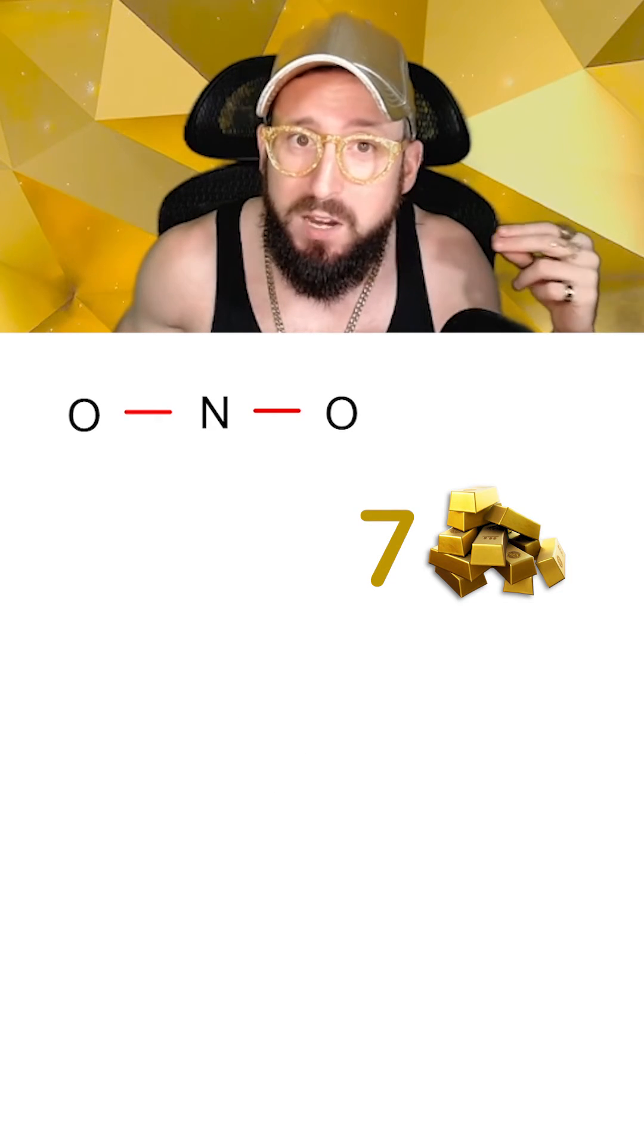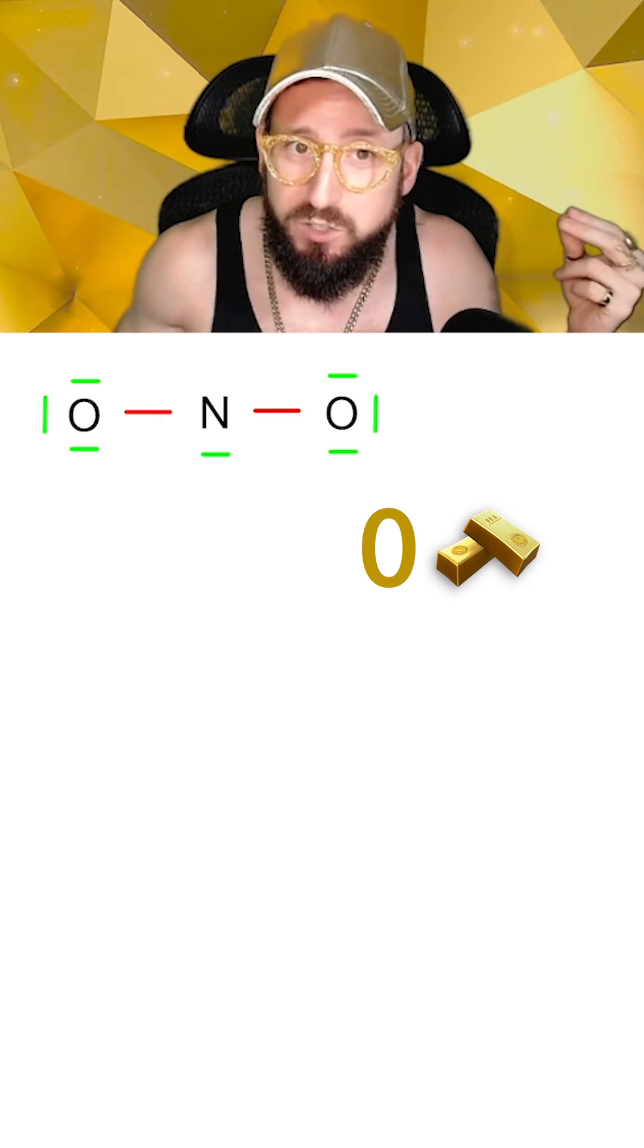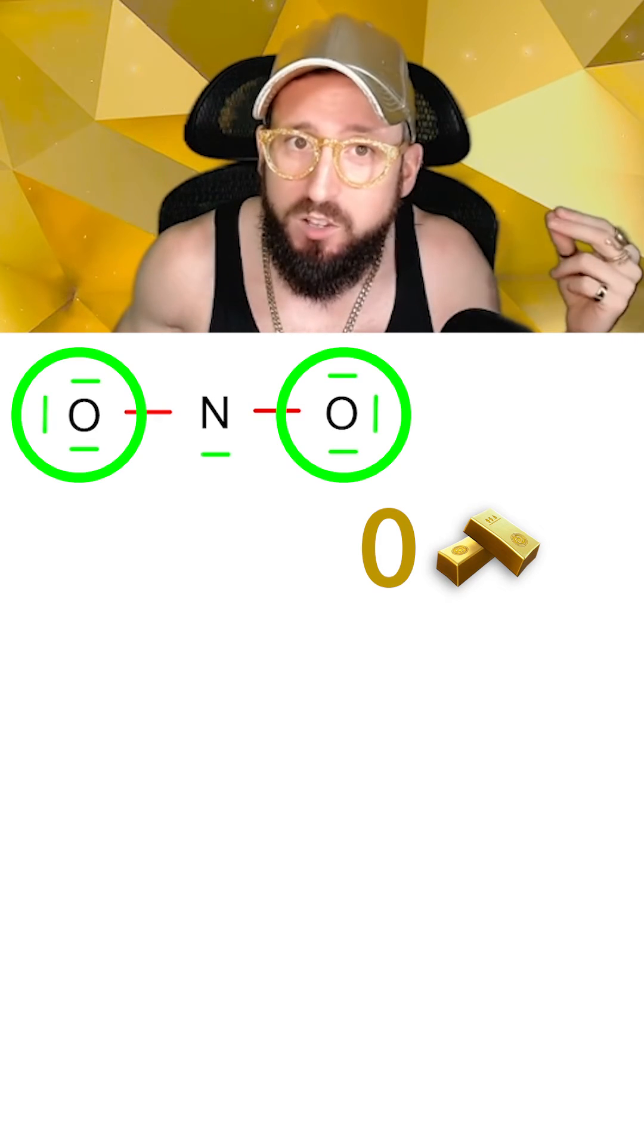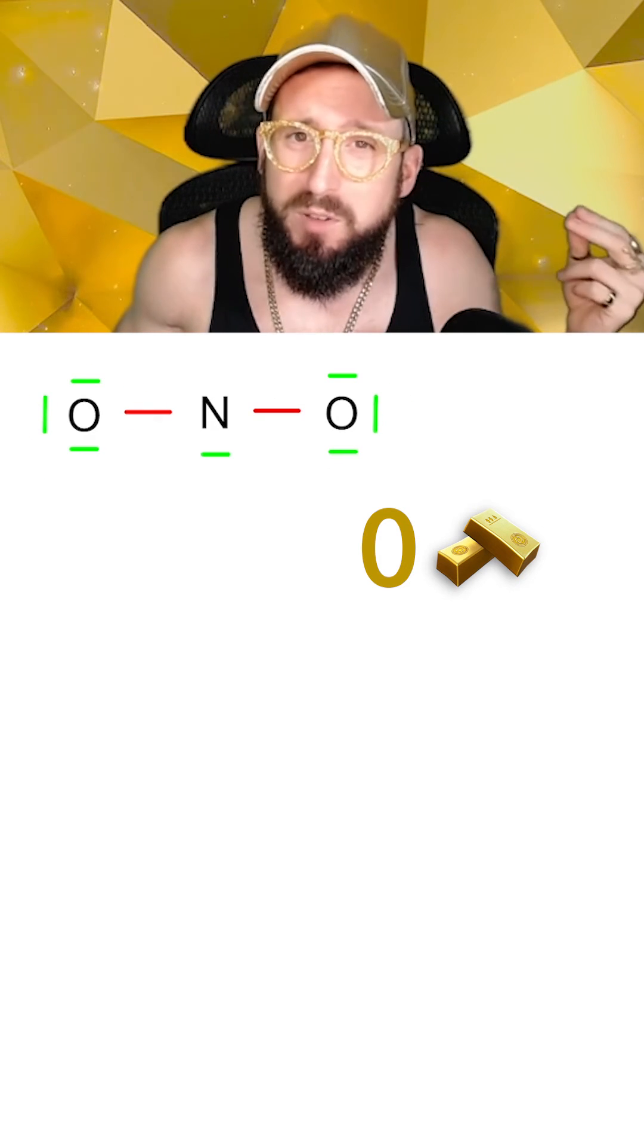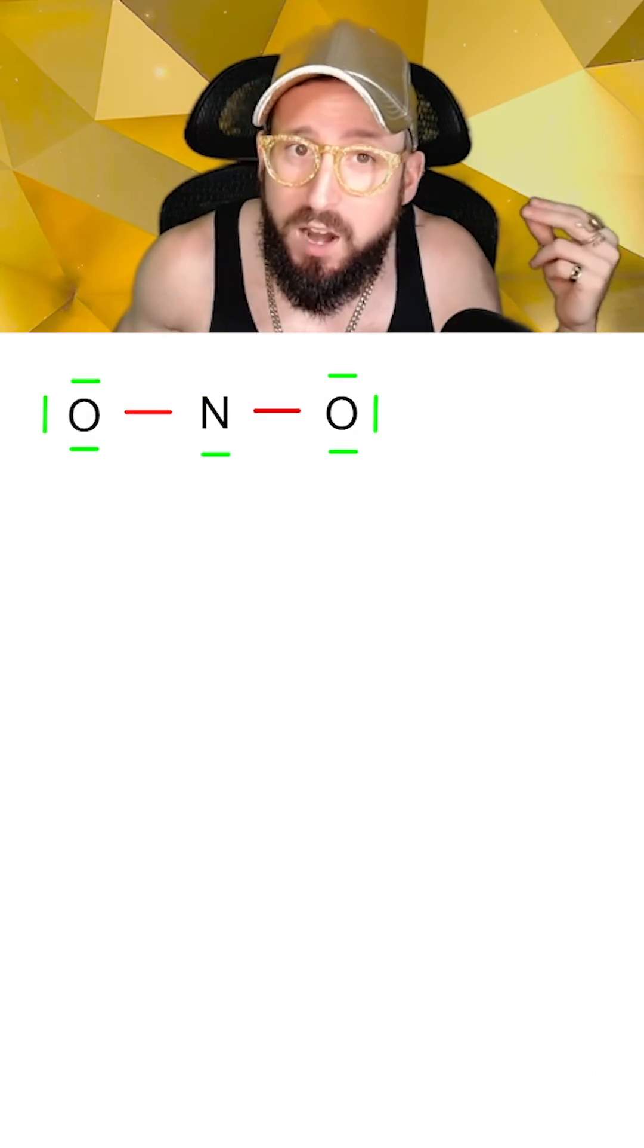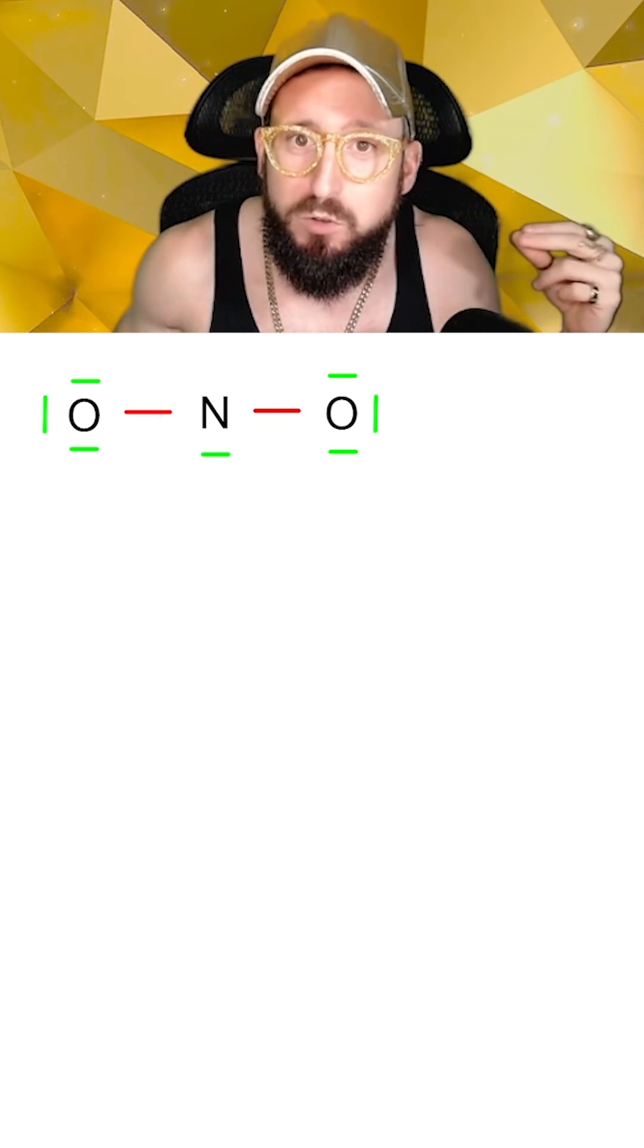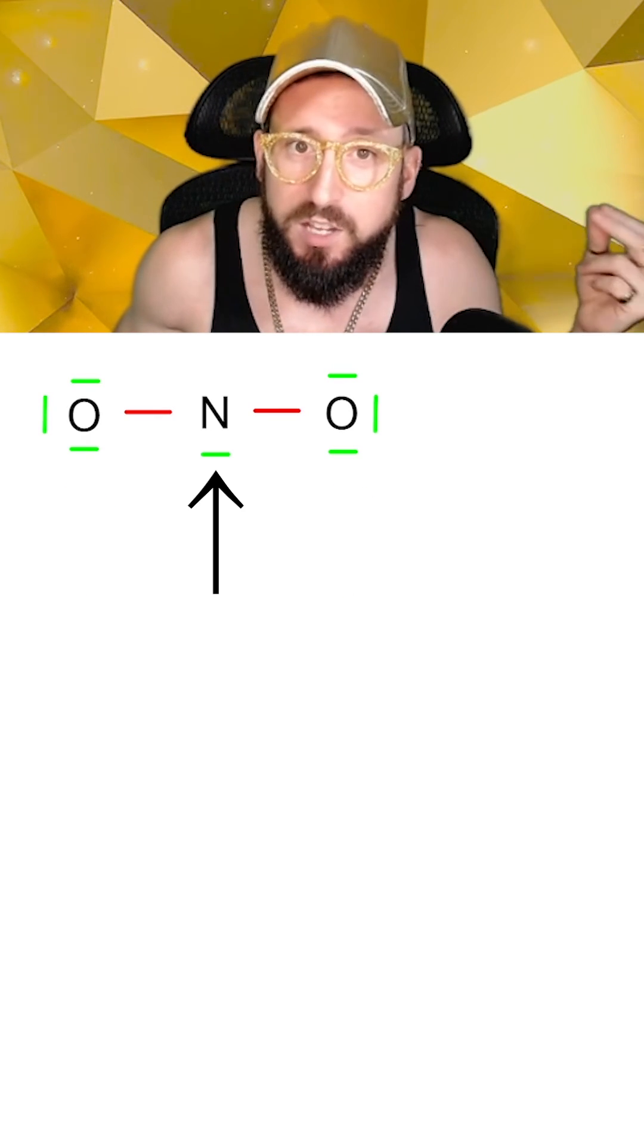Our next step is to try and use up all the remaining bars by first placing them on the outside oxygens, and then on the central nitrogen. While now we've placed enough bars on the oxygens for each of them to have four, the problem is that we have run out of bars to make the nitrogen happy, and it only has three. The trick here is that whenever you run out of bars, try borrowing one of the non-connecting bars from an outside element and use it to create a double or triple bond to the central element.